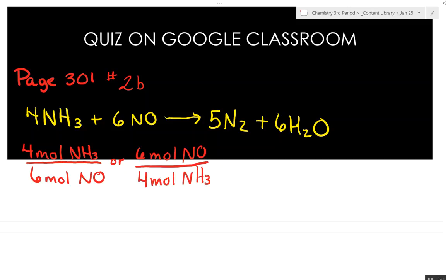Now keep moving across using this one to start with. So then we can have 4 moles of NH3 to 5 moles of nitrogen gas.